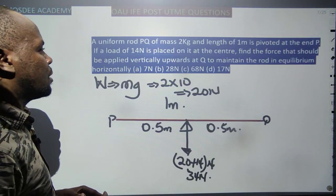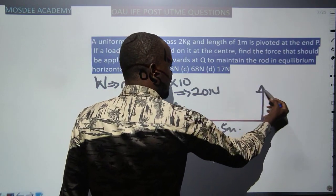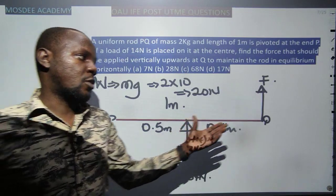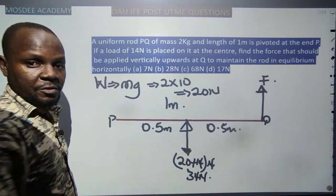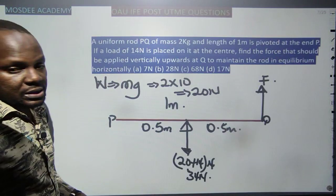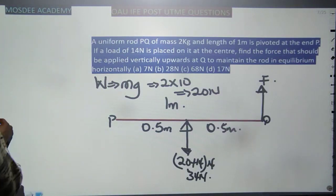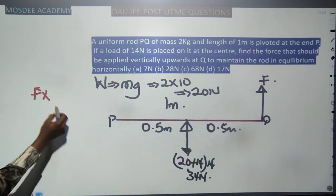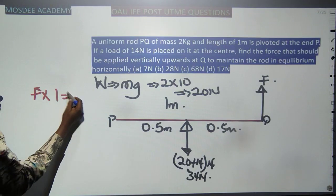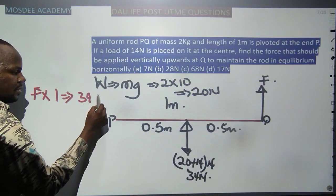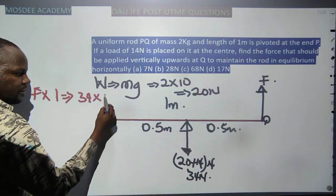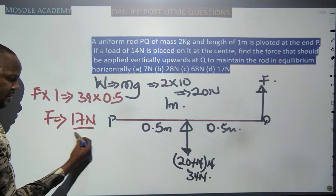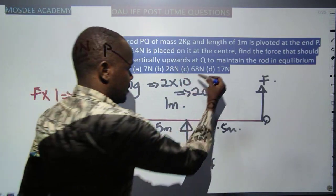We need the vertical force at Q to maintain equilibrium. Taking moments about P: upward moment = F × 1 m (distance from P to Q). Downward moment = 34 N × 0.5 m (distance from P to centre). So F × 1 = 34 × 0.5 = 17 N. Therefore F = 17 N.